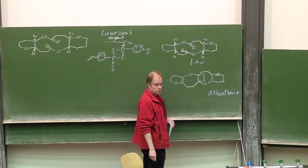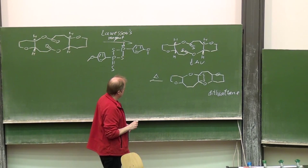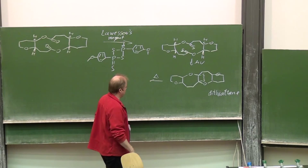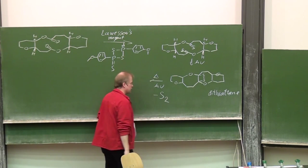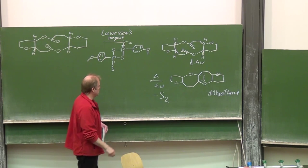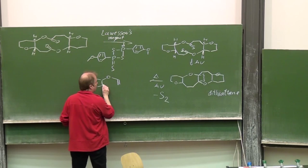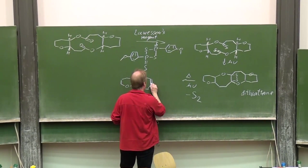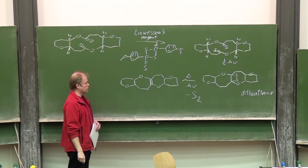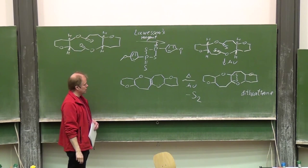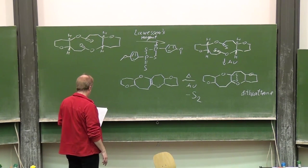The dithiathane is not very stable, as you can imagine. Either thermally — just heating it up — or by photochemical irradiation, the S₂ molecule is eliminated, and then we have that C–C double bond — a very electron-rich olefin. Then we just need to hydrogenate this double bond.